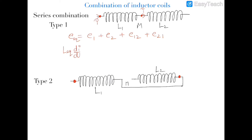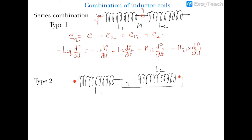The value of equivalent EMF gives: -L_eq × dI/dt = -L1 × dI1/dt - L2 × dI2/dt - M12 × dI2/dt - M21 × dI1/dt. The current flowing in these coils is the same because they are connected in series, so dI1/dt and dI2/dt are equal.